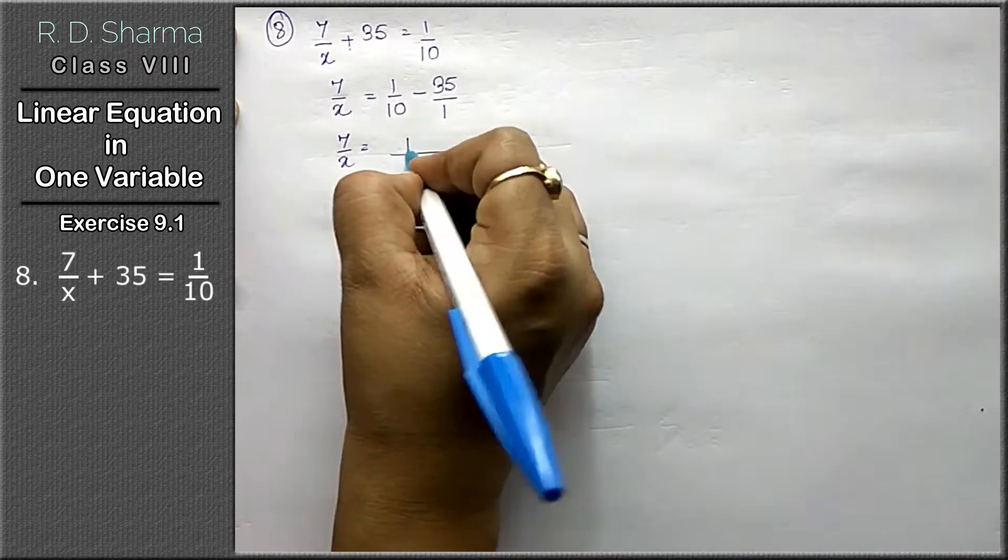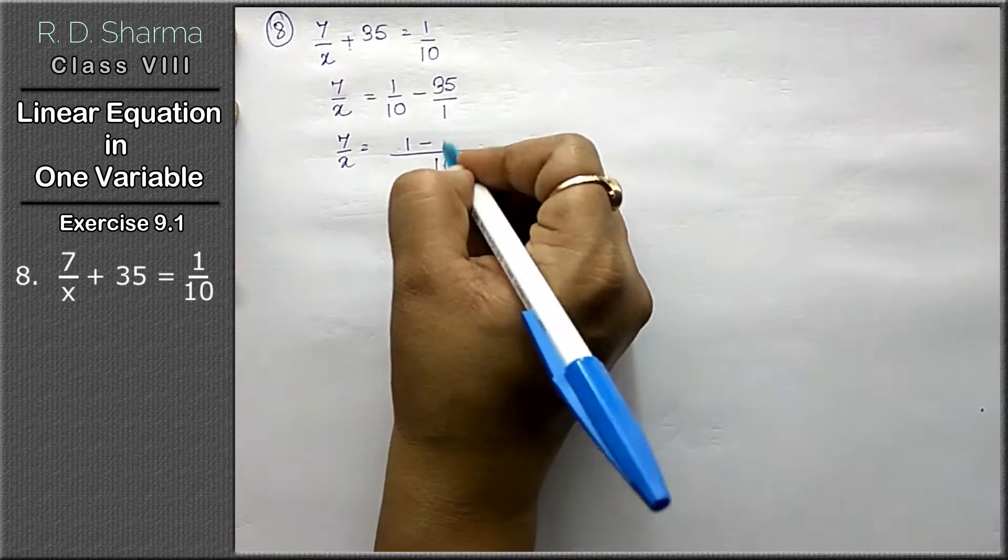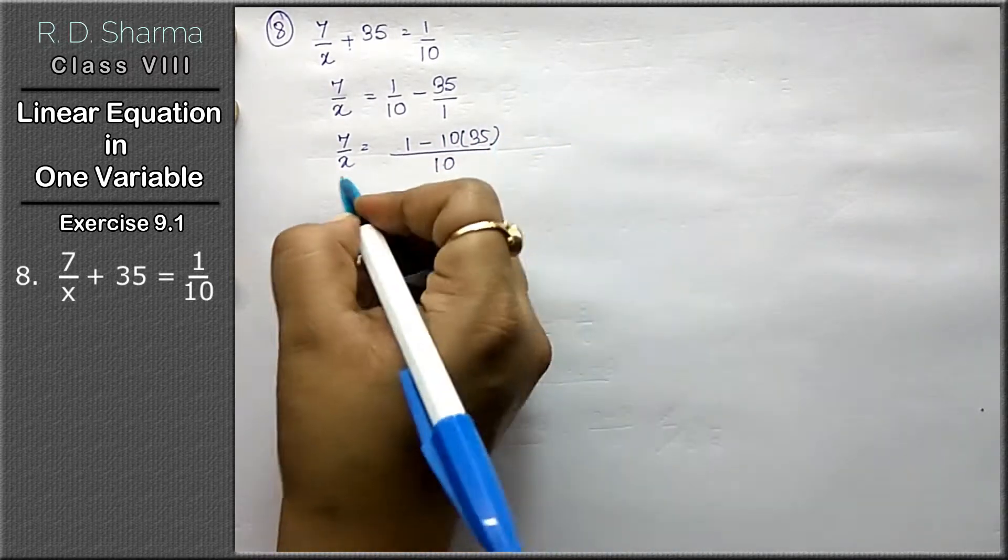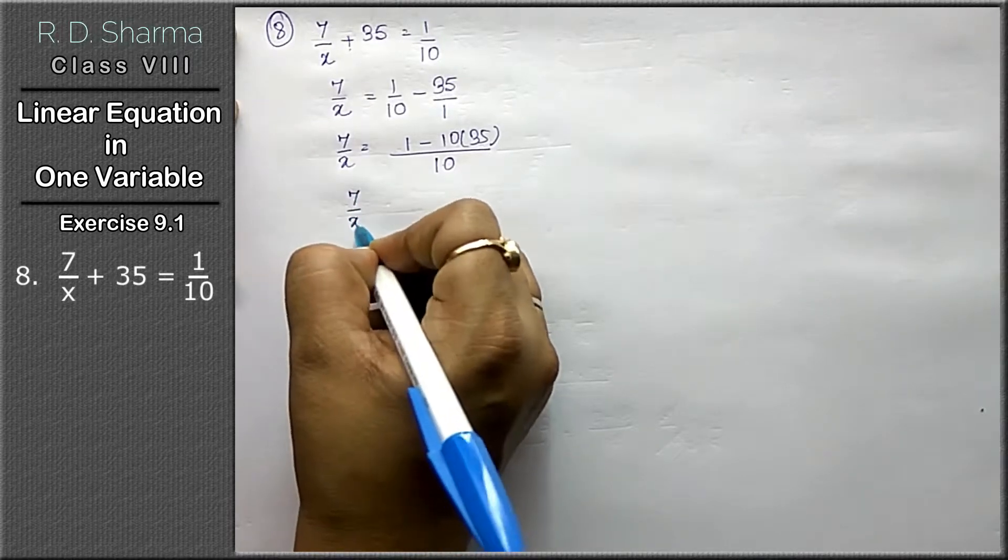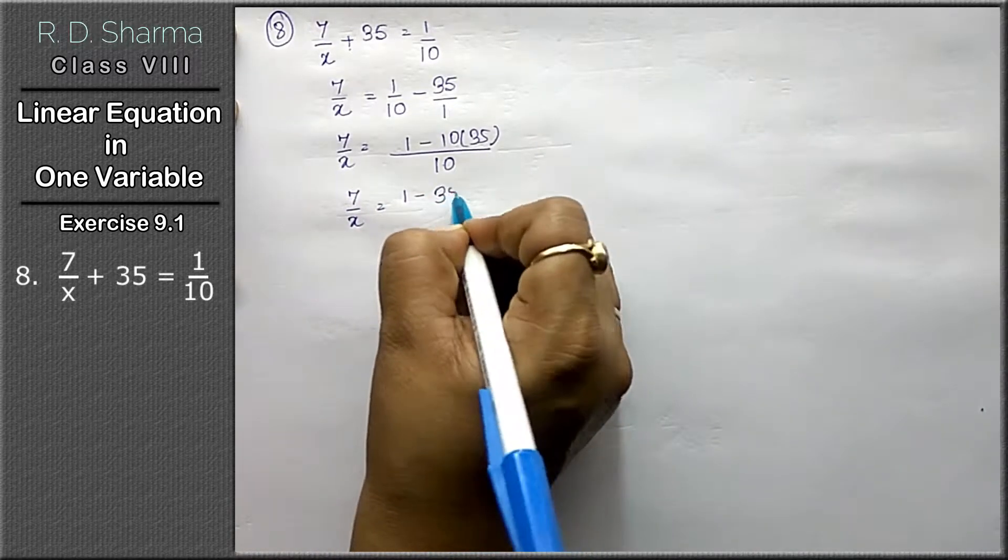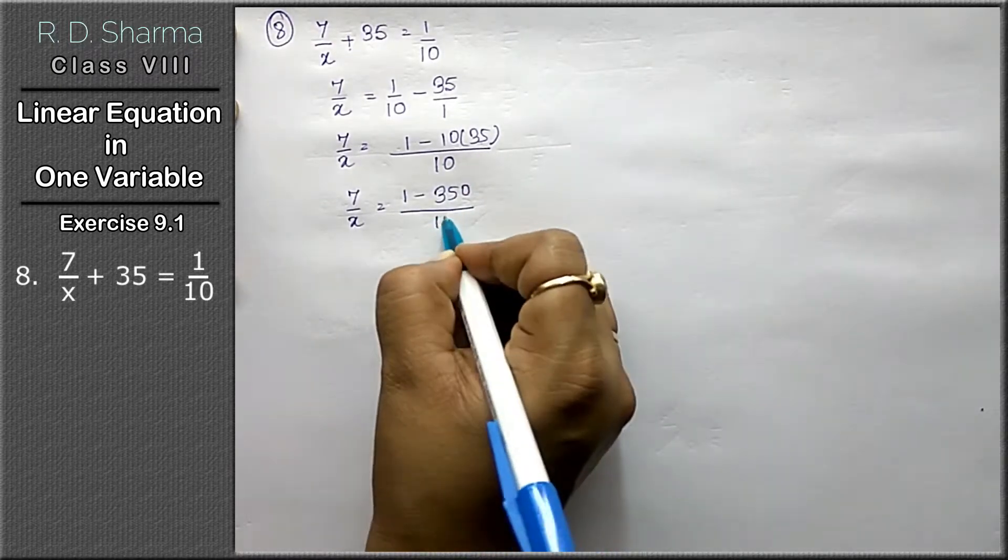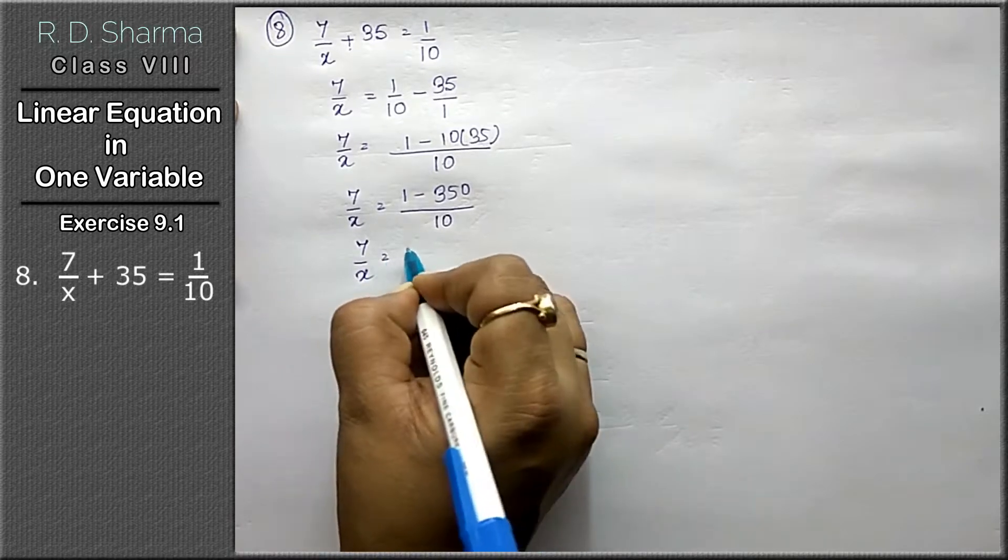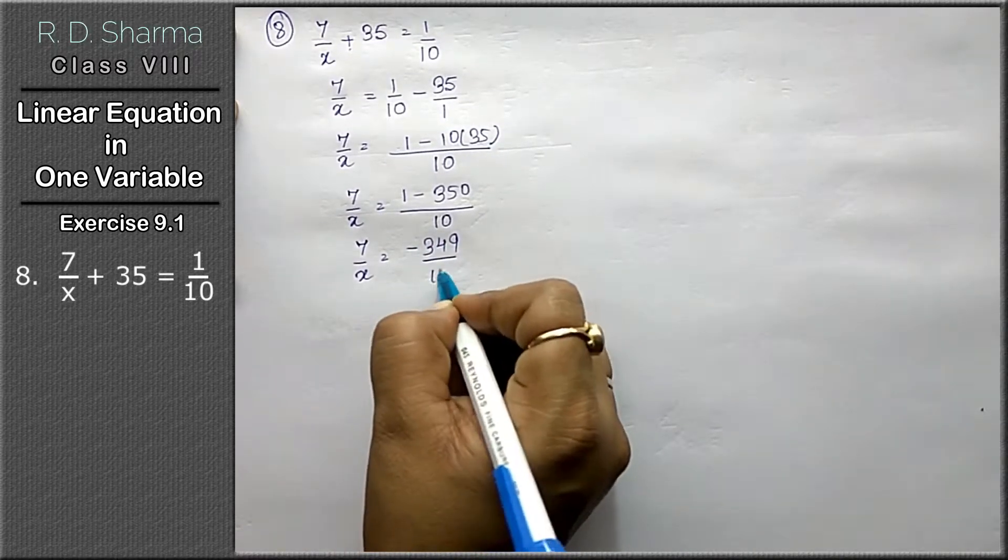10 is the LCM. 1 minus 10 once a 10, 10 ki multiply 35 mein. Now 7 upon x equals to 1 minus 350 upon 10. Now 7 upon x equals to minus 349 upon 10.